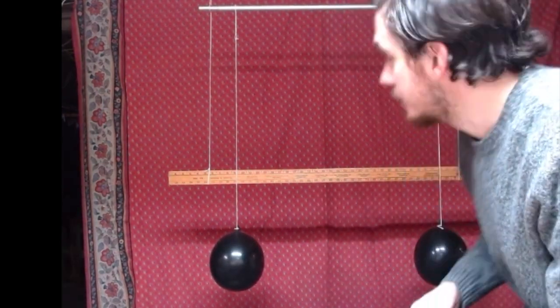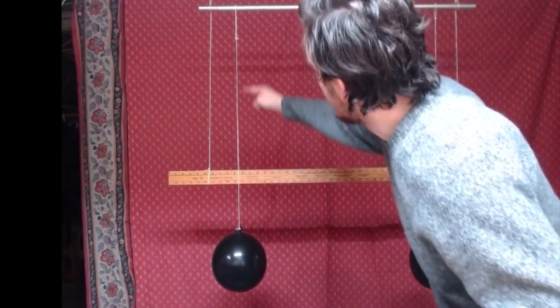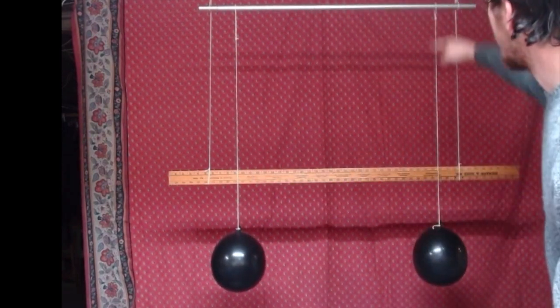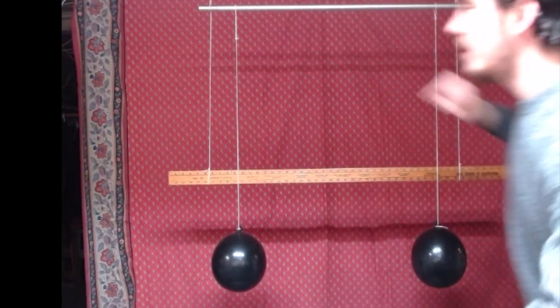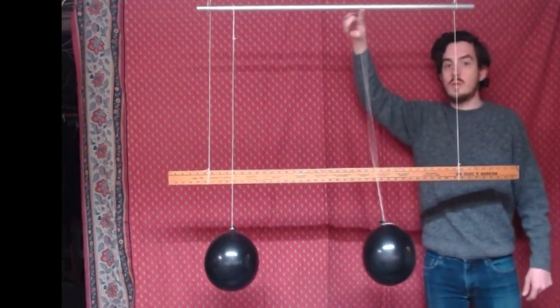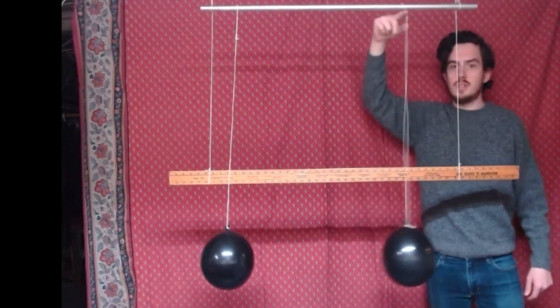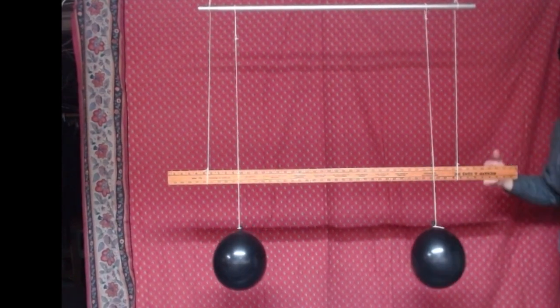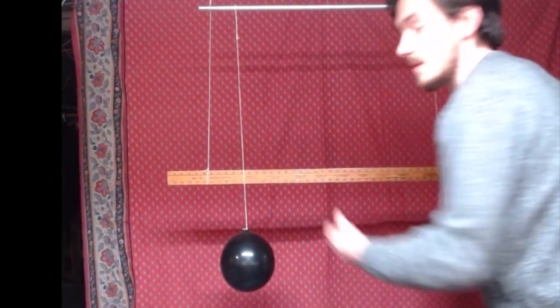I did my best to blow them up so they were the same. They're connected to strings that are approximately the same length. Up here is a metal rod that serves the purpose of allowing me to move the balloons towards each other and away from each other. Then here I have a ruler.